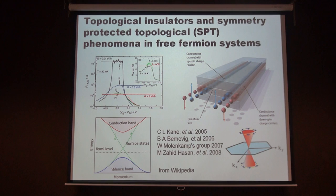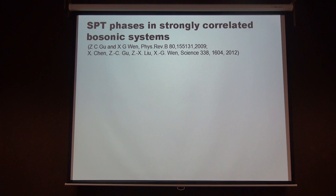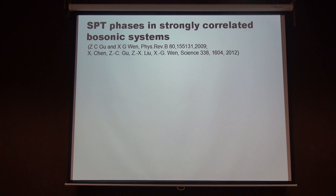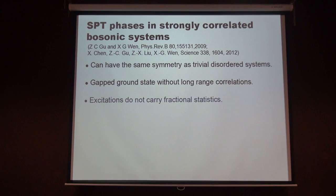This is a particular two plus one dimensional material that has been first discovered, and there are also a lot of three-dimensional materials. From this point of view we can define a large class of so-called symmetry-protected topological phases beyond correlated systems. Let me just repeat the properties of this kind of SPT phase: first, they can have the same symmetry as a true disordered phase, and they must have a gapped ground state without allowing correlations, and the excitations do not carry fractionalized statistics — that's different from the fractional quantum Hall phase. They are indistinguishable from the true disordered state if the symmetry is broken in the bulk.